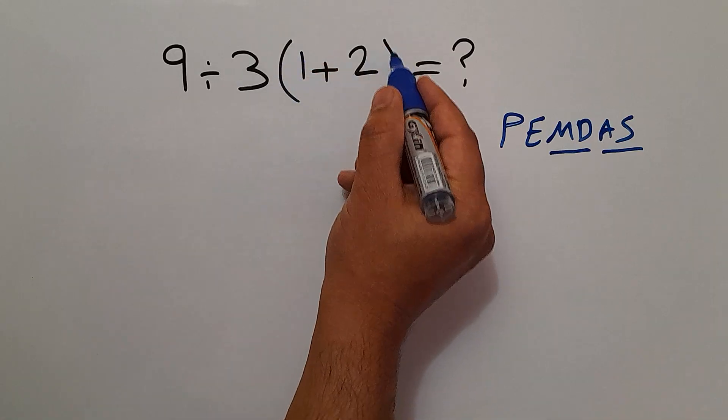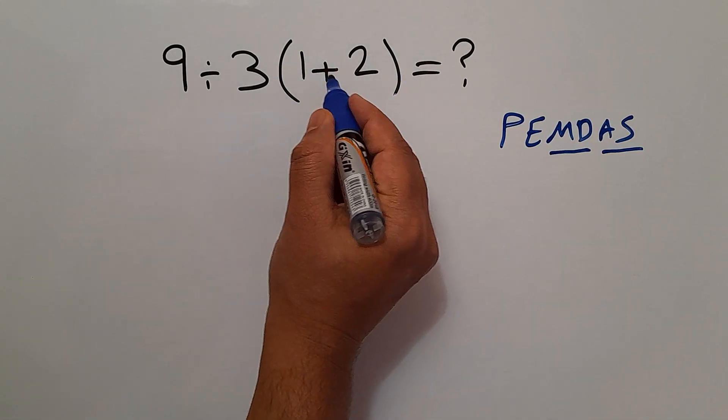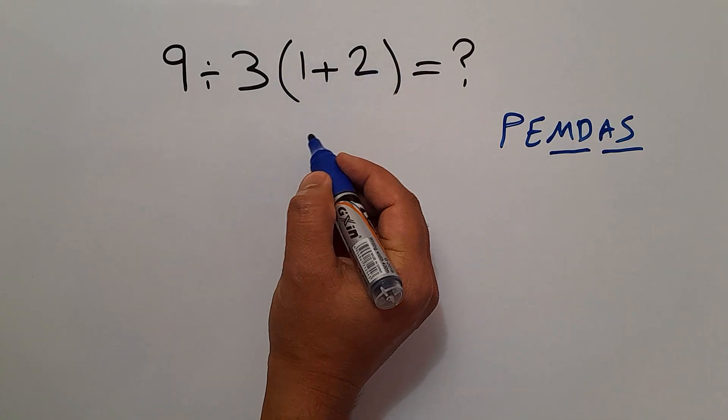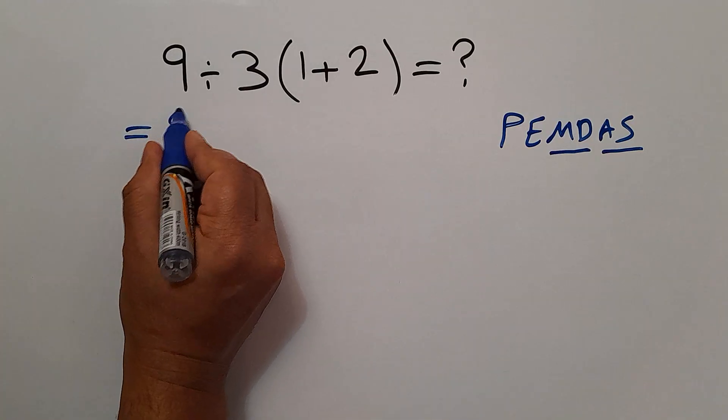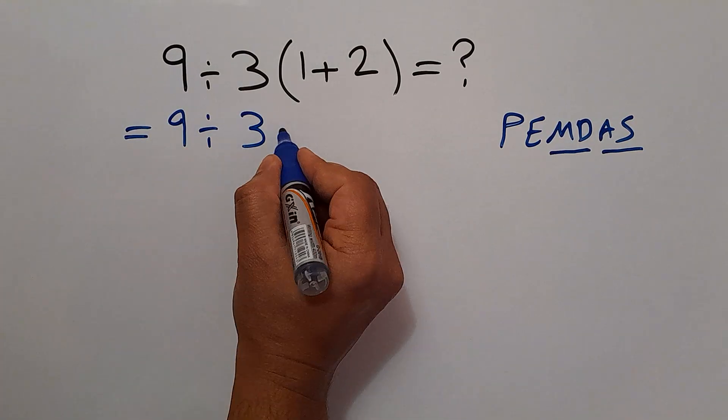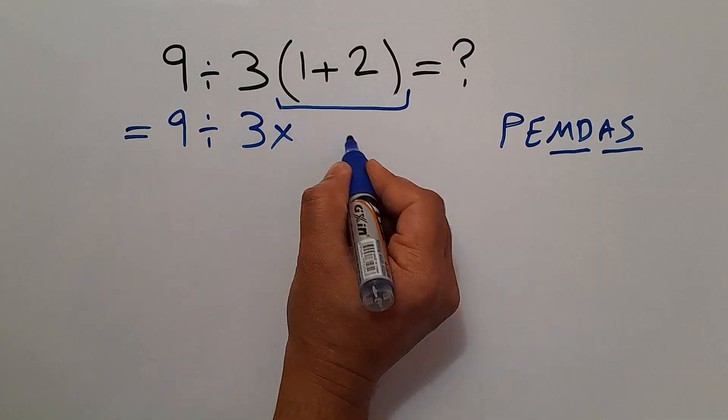here, first, we have to handle these parentheses. 1 plus 2 gives us 3. So, we have 9 divided by 3, then times 3.